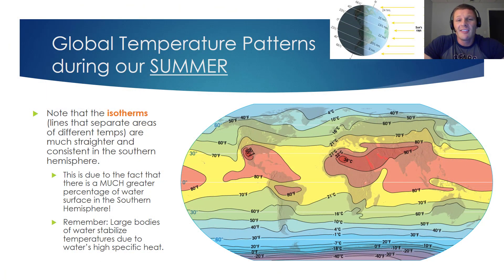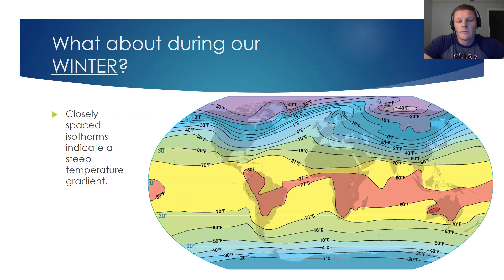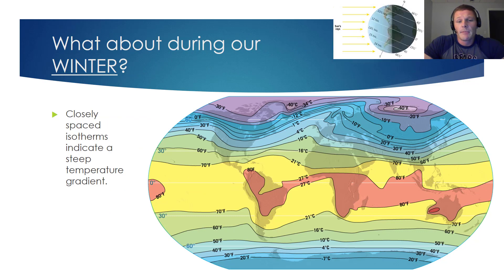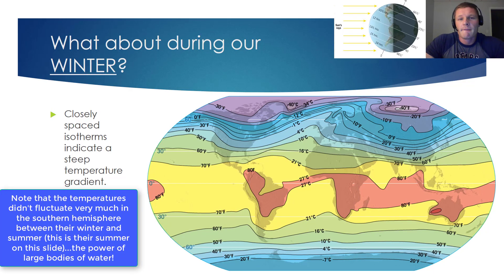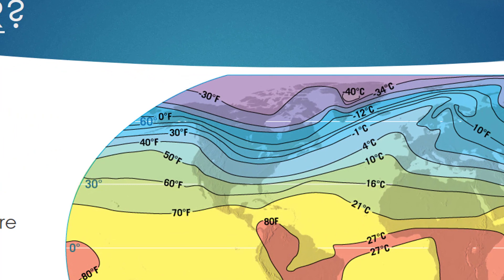Large bodies of water serve as the great stabilizers for climates, and they also do a very good job of straightening isotherms. During our winter months in the Northern Hemisphere, we see a lot more blue in the Northern part of the map. Notice how closely the isotherms are spaced during our winter months, especially in the Northern part of the United States and up over the Great Lakes. When you see closely spaced isotherms, that is indicating a very steep temperature gradient.